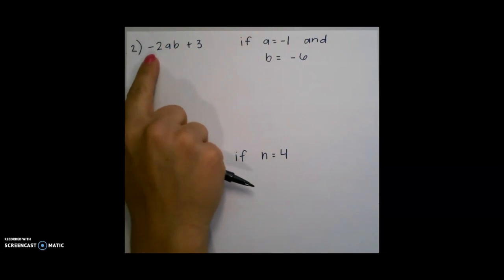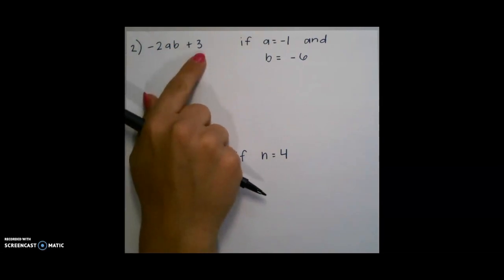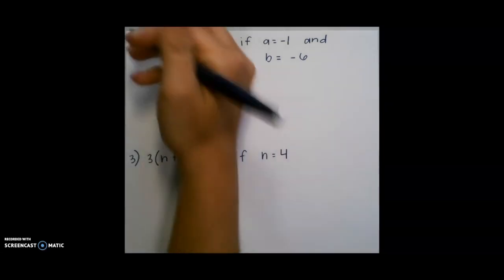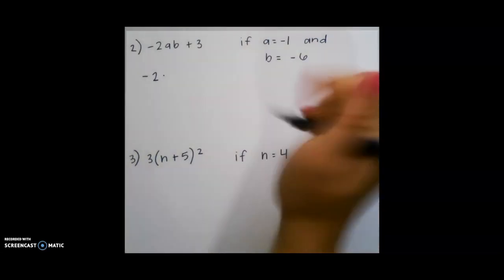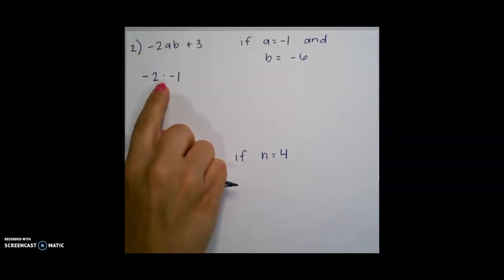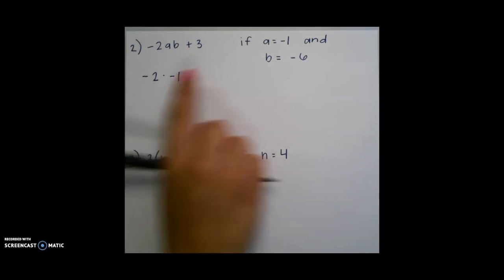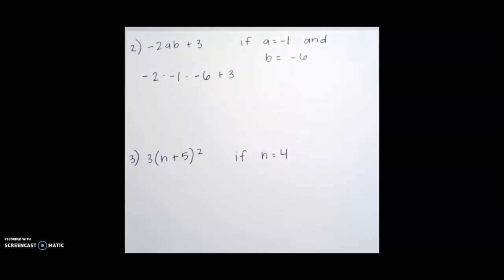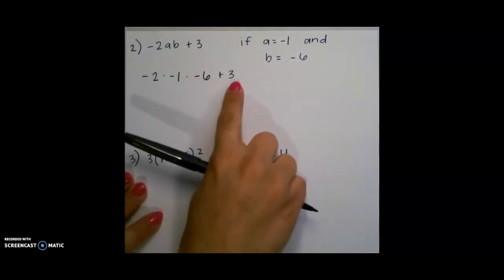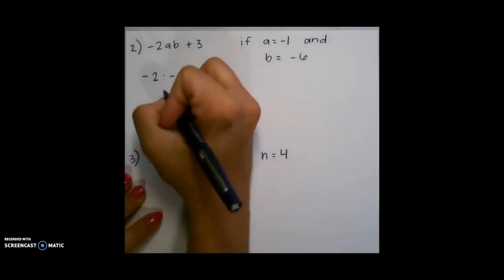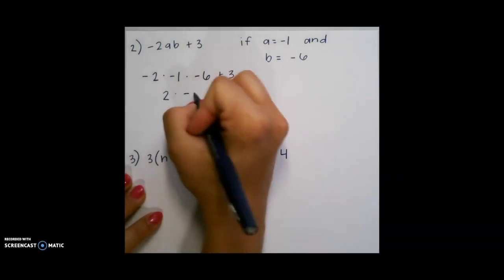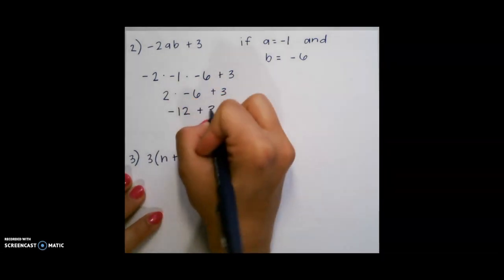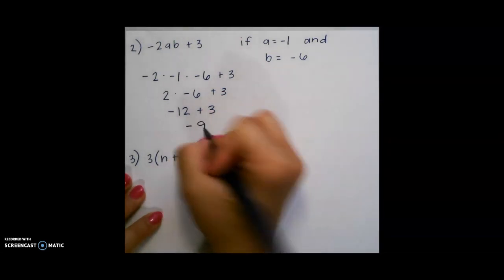For our next example, we have negative 2ab plus 3. If I have a number next to two variables, this all means multiplication. Negative 2 times negative 1, so this time I use the multiplication symbol instead of the parentheses, and times negative 6 plus 3 at the end. So we just multiply from left to right. Negative 2 times negative 1 would give me positive 2, times negative 6 would give me negative 12, and then plus 3 would give me negative 9.